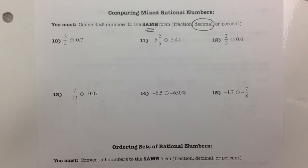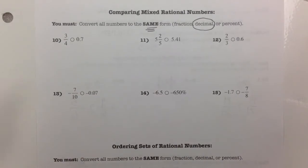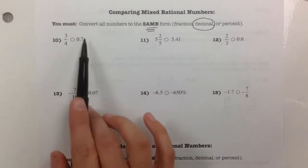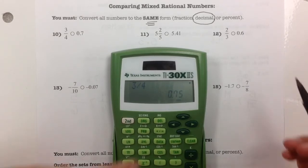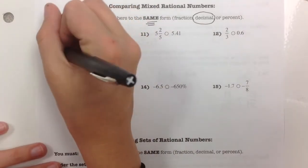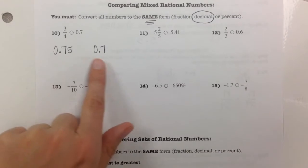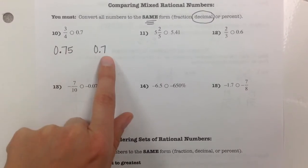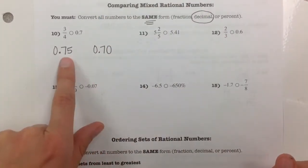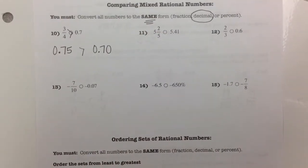First example: 3 fourths compared to 7 tenths. I'll convert the fraction to a decimal using my calculator — 3 divided by 4 gives me 75 hundredths, 0.75. On the right I have 7 tenths, so I add a zero to make 0.70. Now I can compare: 75 is greater than 70, so 3 fourths is greater than 7 tenths. Next, 5 and 2 fifths compared to 5 and 41 hundredths. Same whole number, so I convert just the fraction: 2 divided by 5 gives me 0.4. Adding a zero gives 5.40 vs 5.41. 40 is less than 41, so 5 and 2 fifths is less than 5 and 41 hundredths.